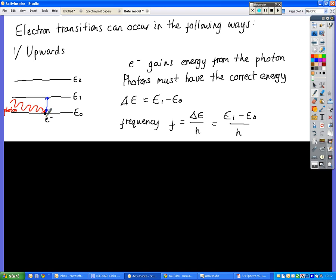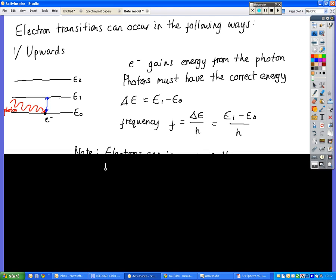If we look at upwards first, you need to provide an electron with a certain amount of energy. You would do that via a photon. You provide enough energy with that photon to cause the jump up one energy level, then you can calculate what the frequency of that photon would be required, because that's just E equals HF for the photon.